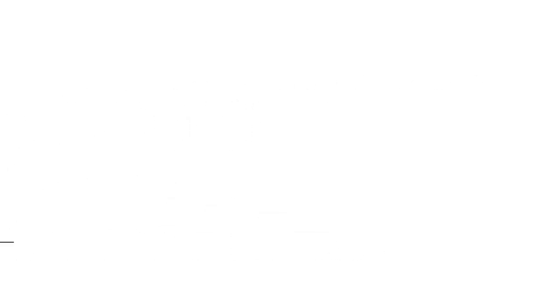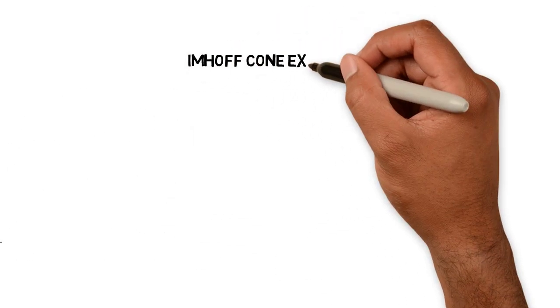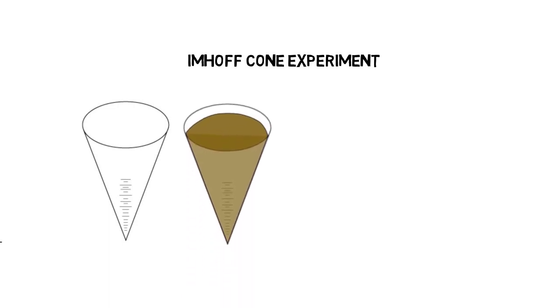A practical test to determine the sedimentation pattern and the size of a sedimentation tank is the Imhoff-Kohen experiment. The Imhoff-Kohen is filled with waste water and after certain time steps the sludge accumulation is measured.